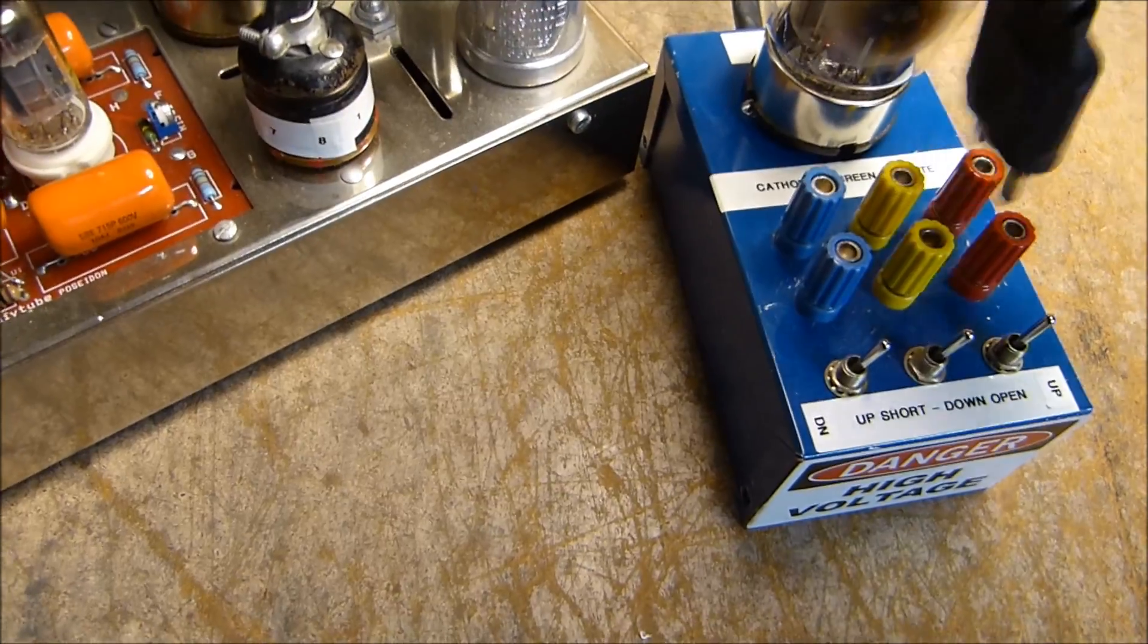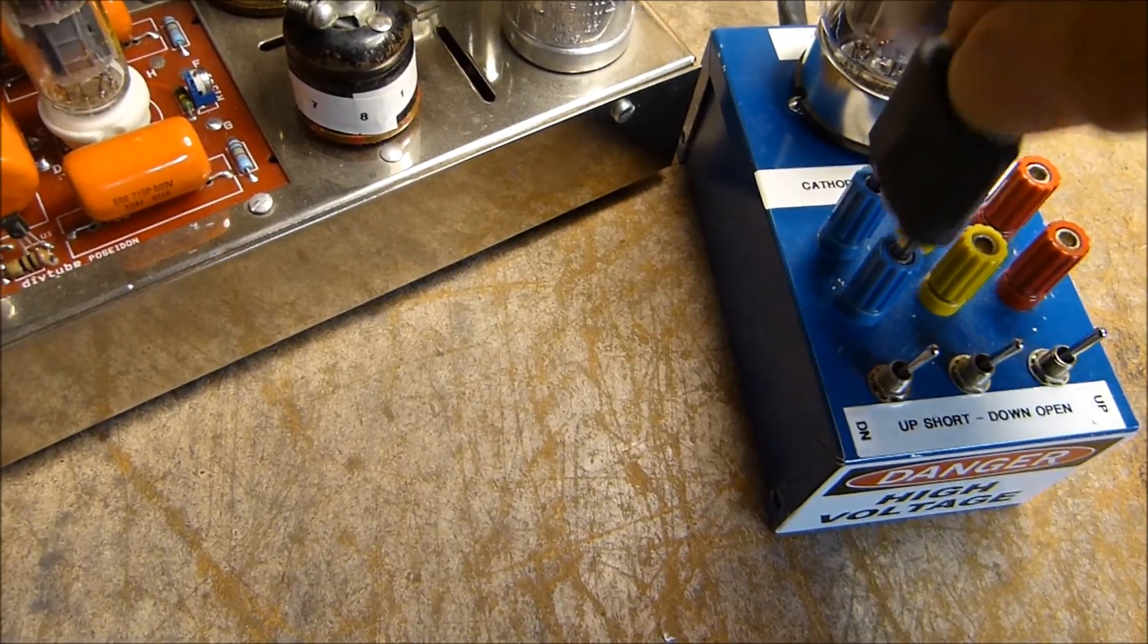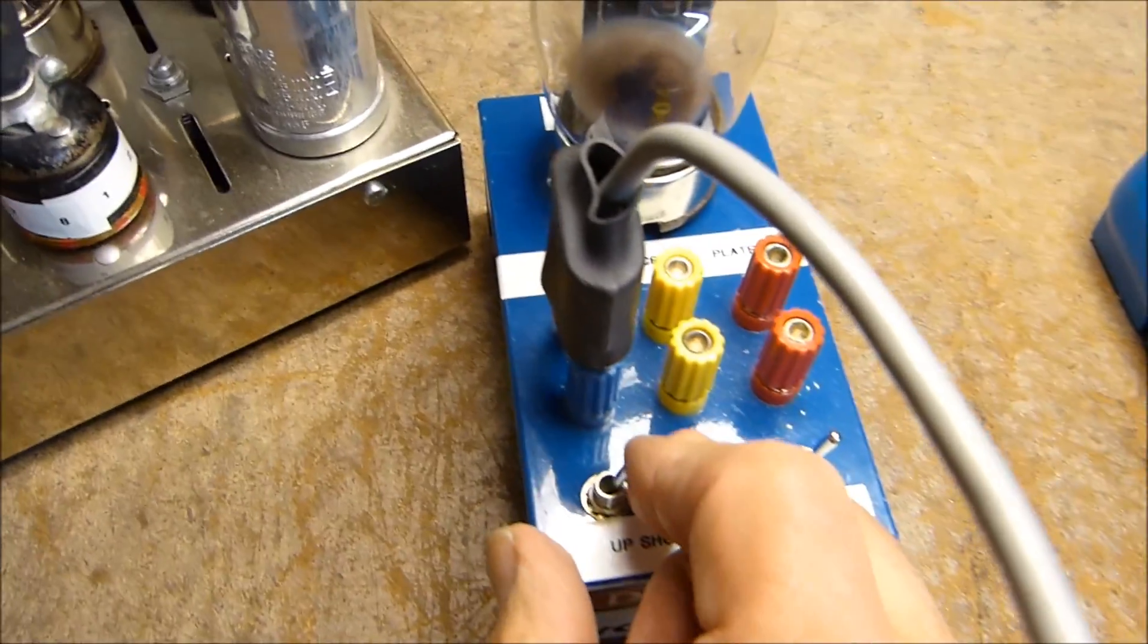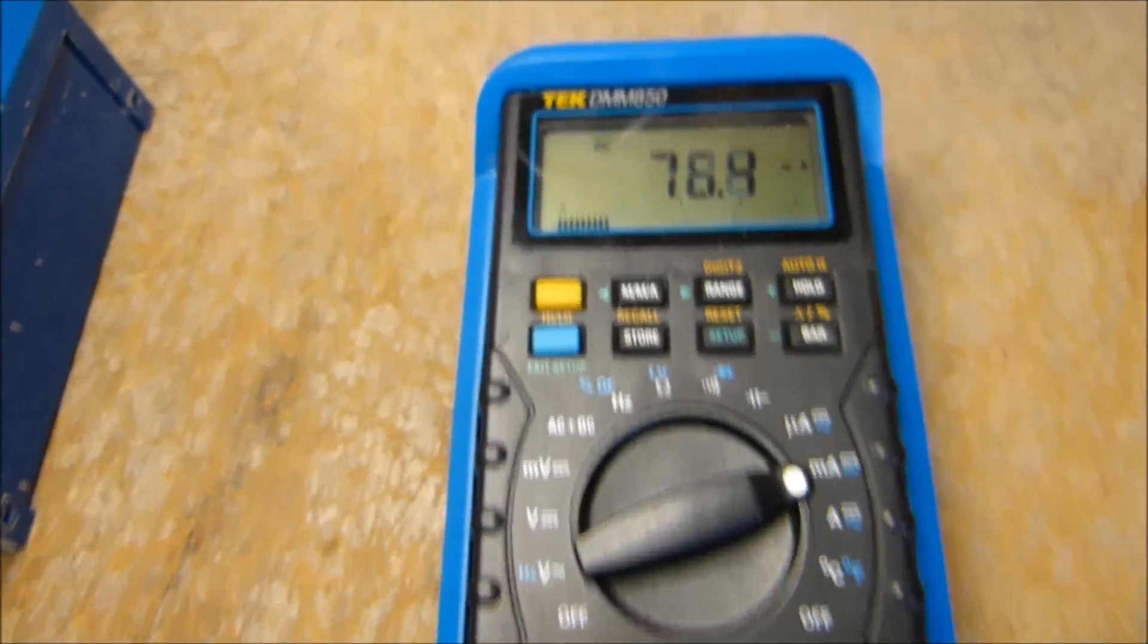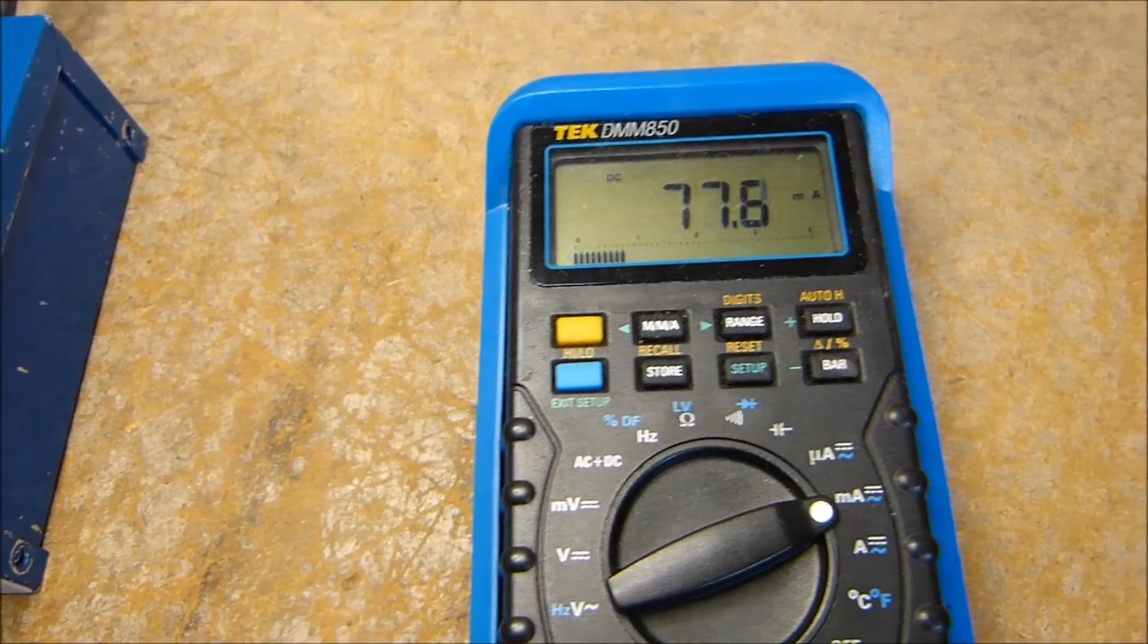Close our switch, being always very cognizant that we're dealing with high voltage. Then the cathode, open that one up. We got 77, let's see, let's let it settle down a minute.